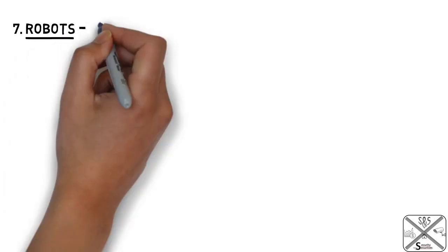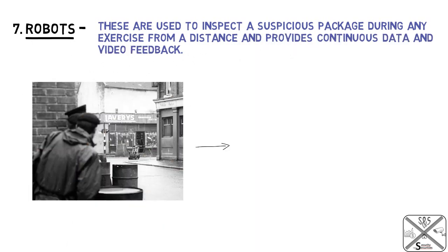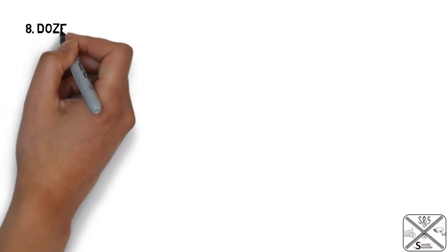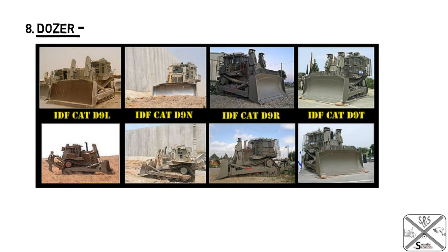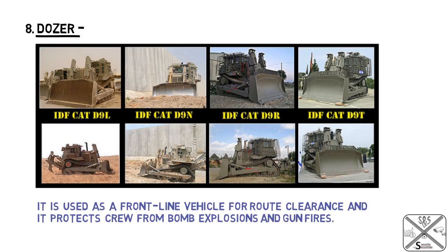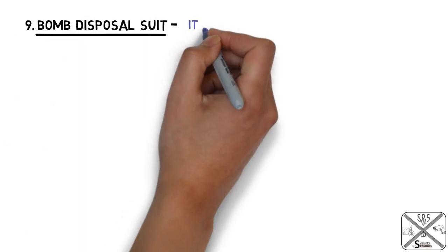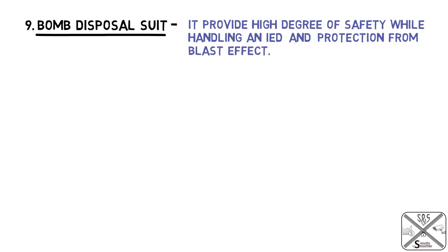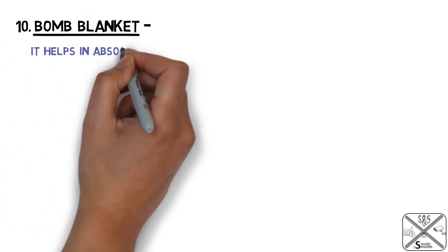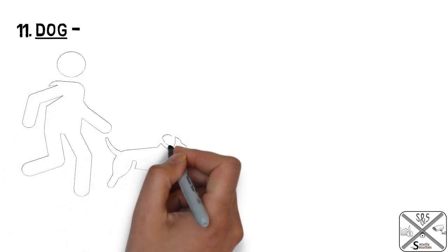Next come robots, which are used to inspect a suspicious package from a distance and provide continuous data and video feedback. Next is the dozer or IED-resistant vehicle, used as a frontline vehicle for route clearance, protecting the crew from bomb explosions and gunfire. Next is the bomb disposal suit, which provides a high degree of safety while handling an IED and protection from blast effects. Next is the bomb blanket, which helps in the absorption of shock and impact through protective layers. Finally, dogs also help in tracking the location of IEDs.